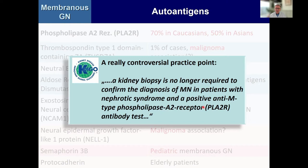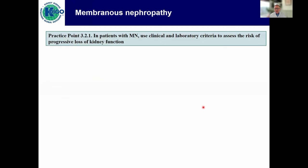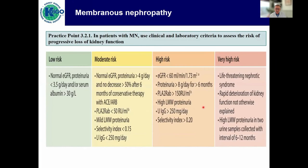What we suggest in the guideline is that in patients with membranous nephropathy, you should use clinical and lab parameters to assess risk, and we distinguish four categories. Low risk: normal GFR, non-nephrotic proteinuria, well-maintained albumin. On the other extreme, the very high-risk patient: life-threatening nephrotic syndrome, rapid loss of kidney function, and very high low-molecular-weight proteinuria. Then two intermediate categories, largely distinguished by baseline GFR, extent of proteinuria, and level of autoantibodies.